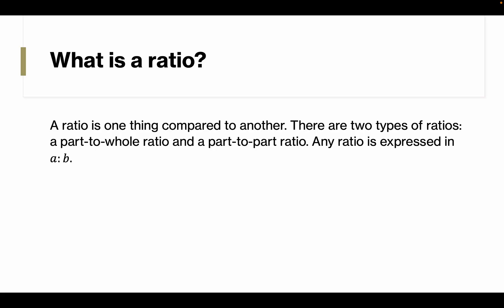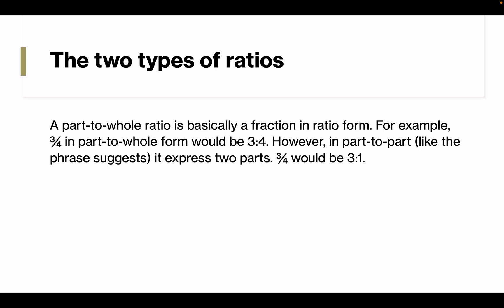A ratio is one thing compared to another. There are two types of ratios: a part-to-whole ratio and a part-to-part ratio. Any ratio is expressed in A is to B. That basically means there's a colon between A and B, and A and B are two variables which are numbers.